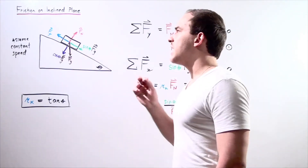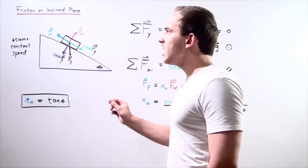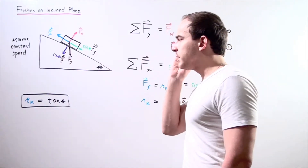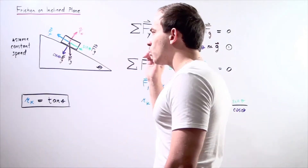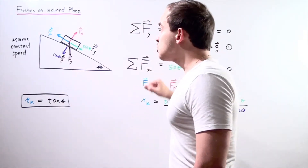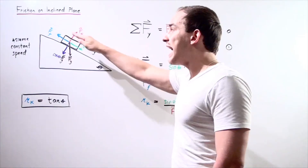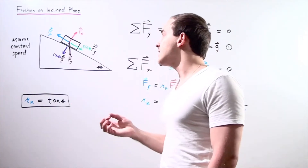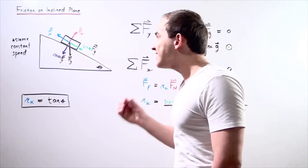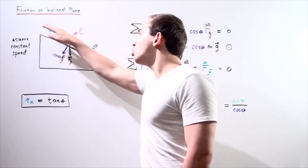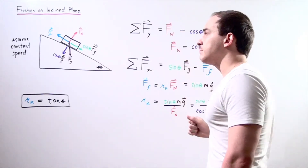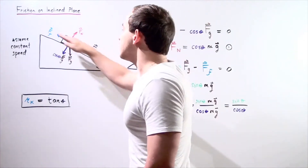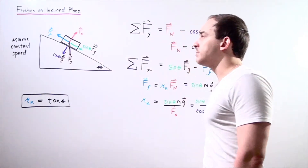Let's examine motion of an object on an inclined plane when there is friction. Suppose we have an inclined plane that makes an angle of theta with respect to the ground. The object is traveling downward along the inclined plane with constant velocity. We choose the x-axis to run parallel to the surface of the inclined plane and the y-axis to be perpendicular to the surface of the inclined plane.